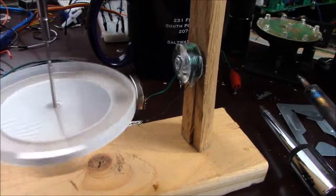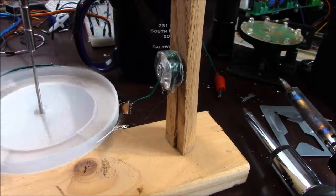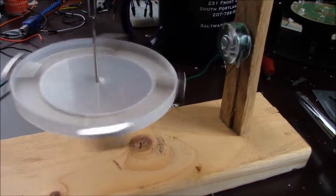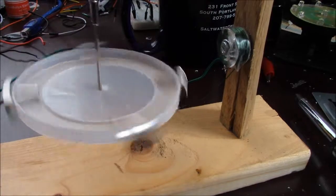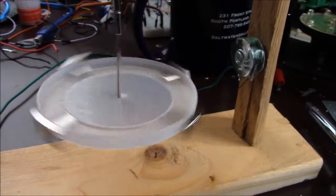All it consists of is this sewing bobbin here wrapped in 30 gauge magnet wire and an old plastic lid. And that has neodymium magnets on it, all the same polarity facing outward.